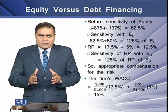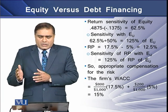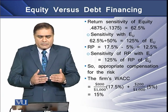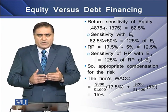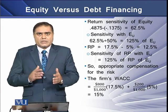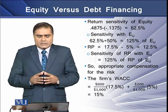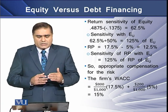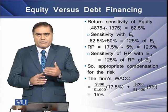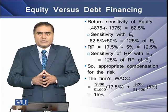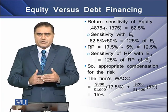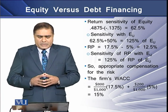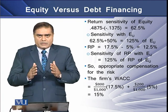The return sensitivity of the levered equity equals 62.5%, and this has a sensitivity relative to the unlevered equity of 125%. Similarly, the risk premium is 12.5% and it has the same relative sensitivity to the unlevered equity's risk premium of 125%. This means the riskiness and return of the levered equity are appropriately aligned, indicating appropriate compensation for risk in this particular case.